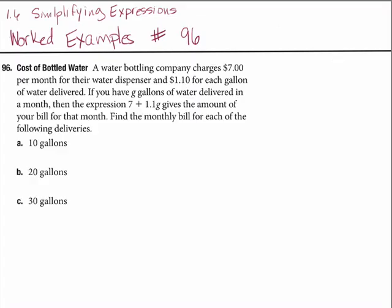In question number 96, cost of bottled water, the text reads, a water bottling company charges $7 per month for their water dispenser and $1.10 for each gallon of water delivered.